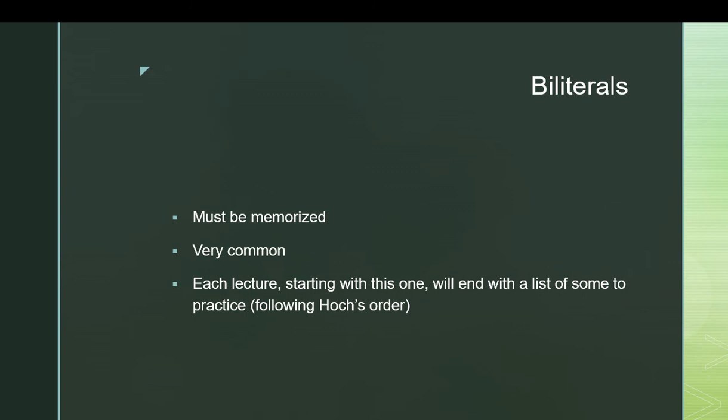Biliterals are very common throughout the language. A high percentage of words have at least one. They need to be memorized — there's no substitute for learning them. In each lecture, starting from this one, we'll end with a brief list of some to practice. I'll be following the order in Hoek's Middle Egyptian Grammar, which is a text I'm going to reference quite a bit through this project. His order goes by the final consonant of the two in the bi-literal, starting with Aleph and working our way down the alphabet.